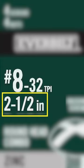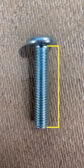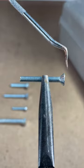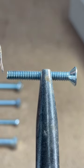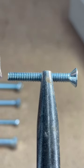The two and a half inches is the length, measured from the underside of the head to the end. If the head is flat and tapered, the measurement is taken from end to end.